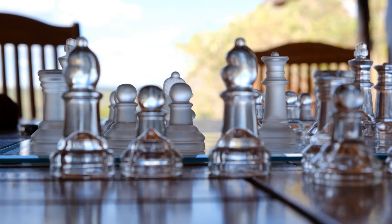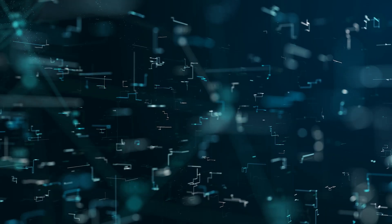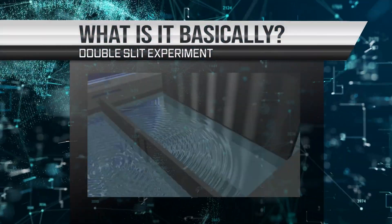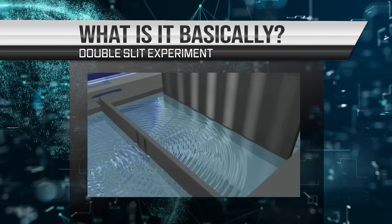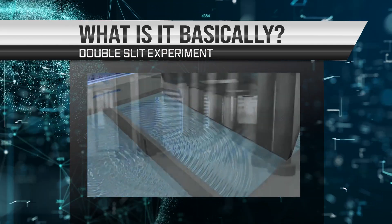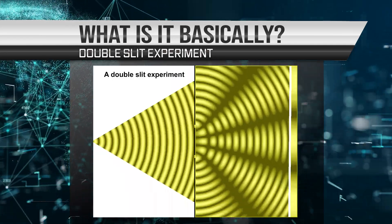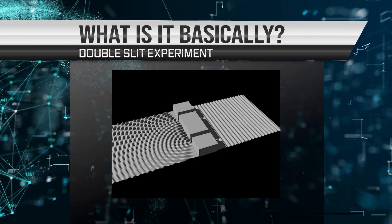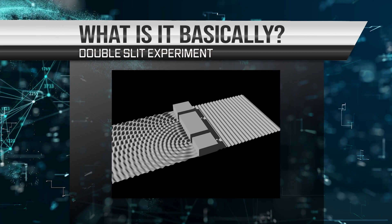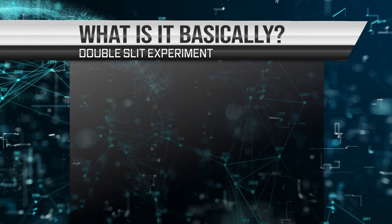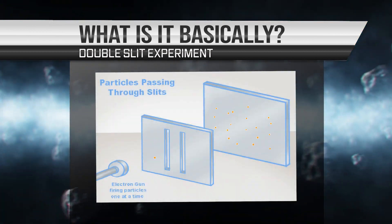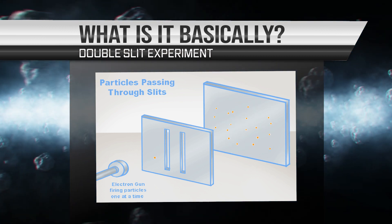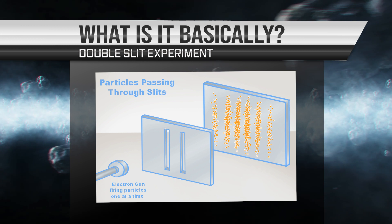It has been demonstrated through a number of experiments, including the famous double slit experiment, in which a beam of light is shown through two narrow slits and creates an interference pattern on a screen behind the slits. This interference pattern is characteristic of waves. However, when the light is shown through only one slit at a time, it creates a single spot on the screen, which is characteristic of particles.